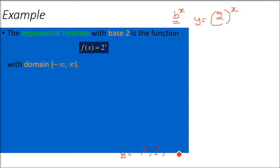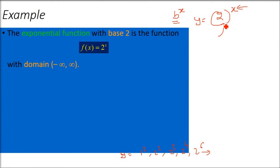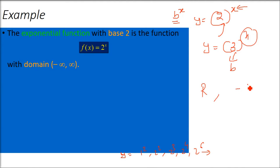So y equals 2 squared, 2 cubed — these are exponents where 2 is the base. As the exponent increases, the values increase, so the graph is increasing. The base 2 is constant and will never change; only x will change. For example, in 3 to the power x, 3 is constant and only x changes. x can take any value — all real numbers from negative infinity to positive infinity.